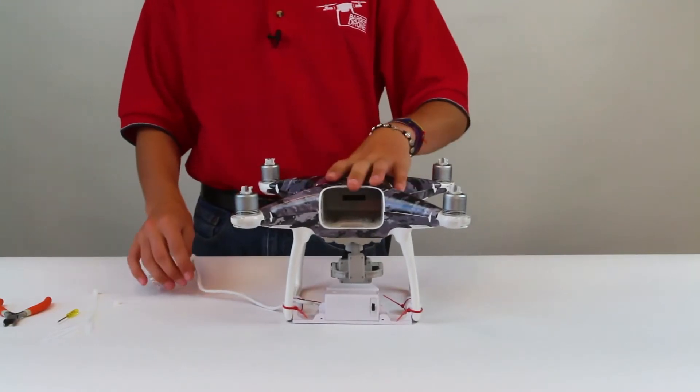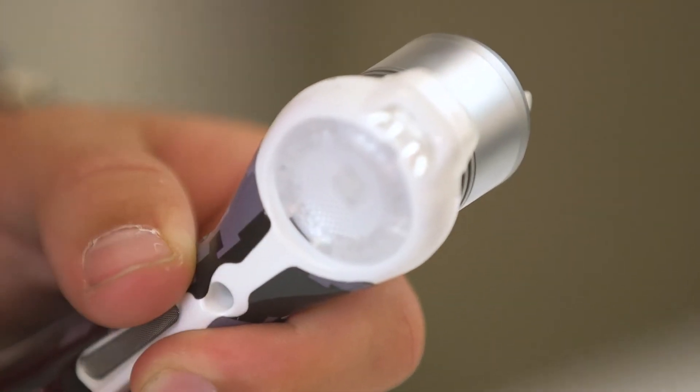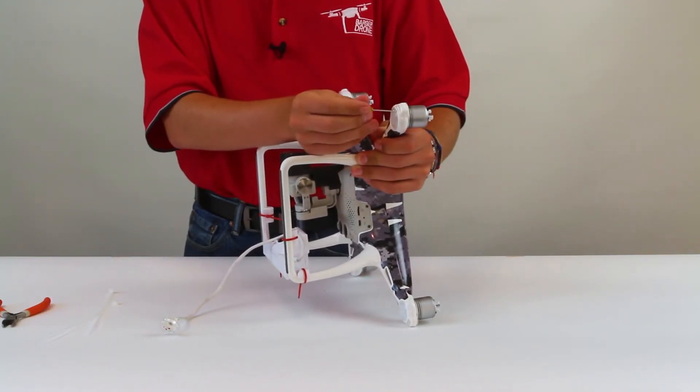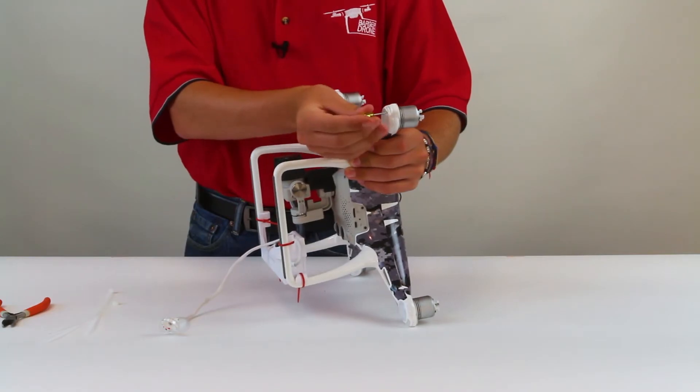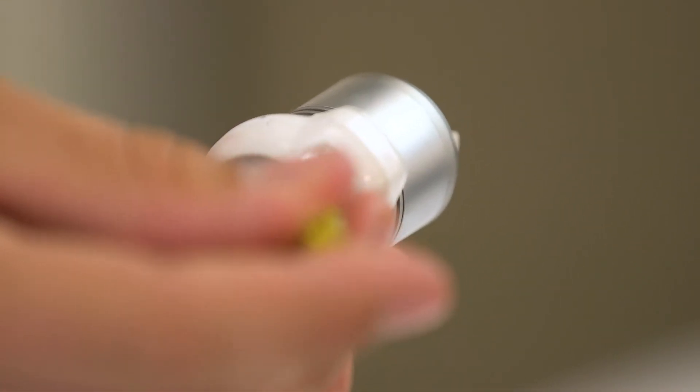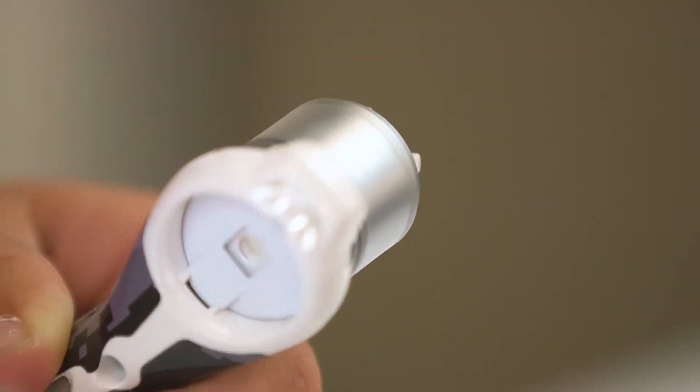Now we need to hook up the photo sensor. You will need to pop off the small LED plastic cover. Please use your small screwdriver or similar tool and locate the small notch at the very end of the arm. Insert your screwdriver and gently take the cover off.